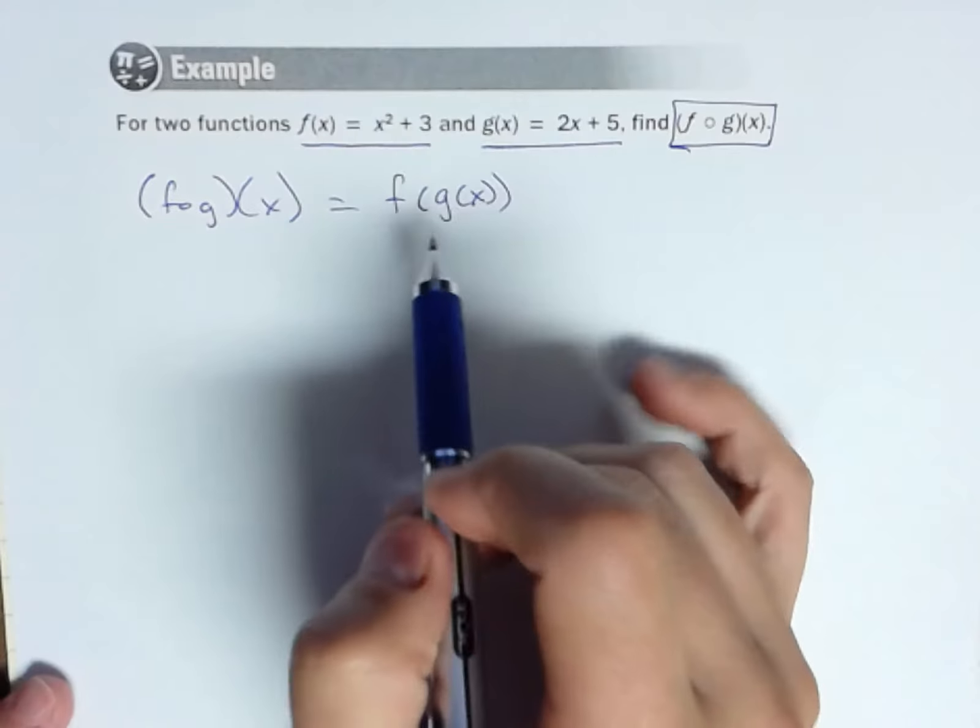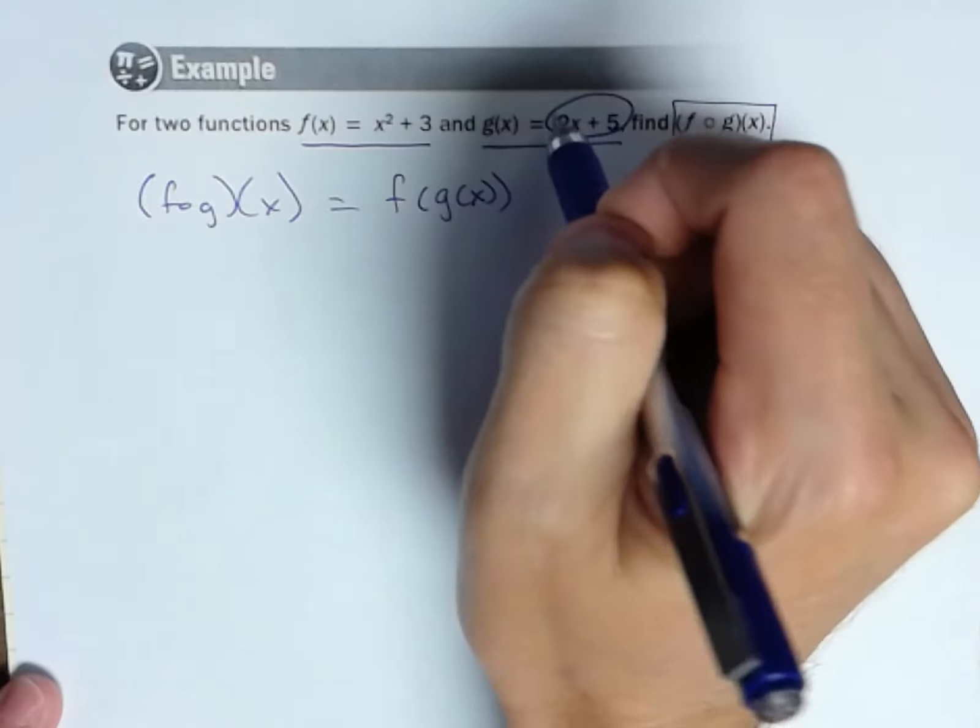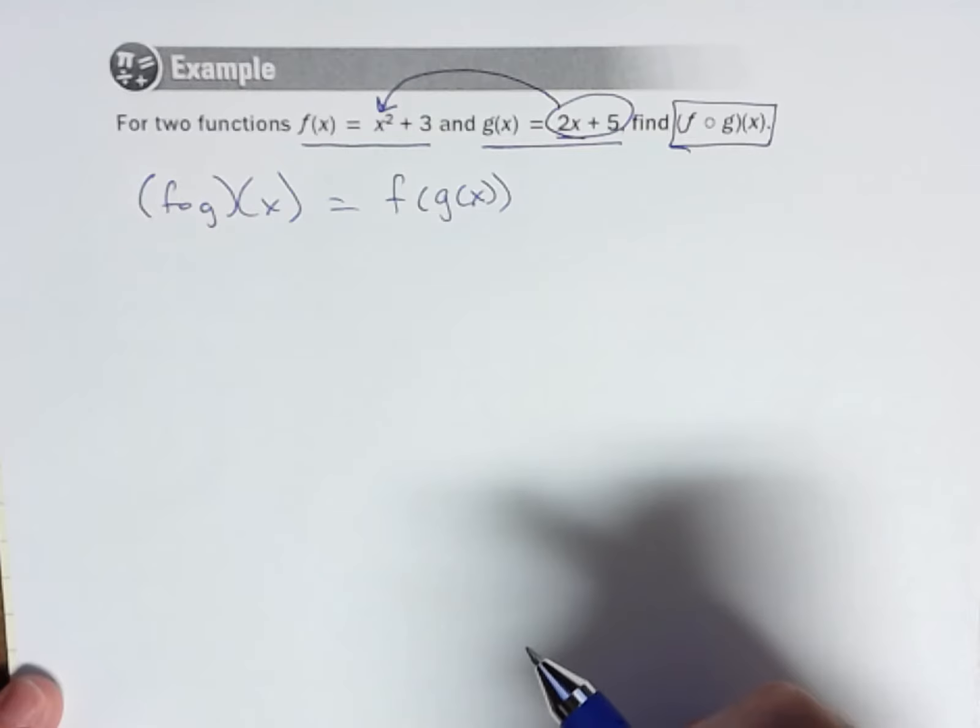So let's go ahead and do that. I'm going to take 2x plus 5, and I'm going to substitute it in for x in my function f.